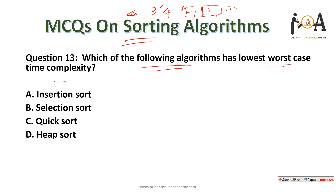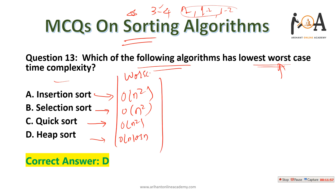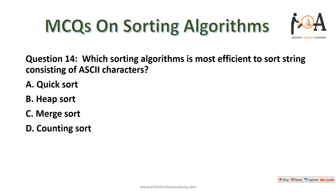Question number thirteen: which of the following algorithms has the lowest worst case time complexity — insertion sort, selection sort, quick sort, or heap sort? Insertion sort worst case is O(n²), selection sort is O(n²), quick sort is O(n²), and heap sort is O(n log n). The lowest is heap sort, so option D is the correct answer.